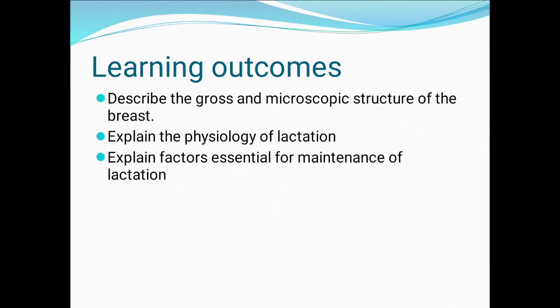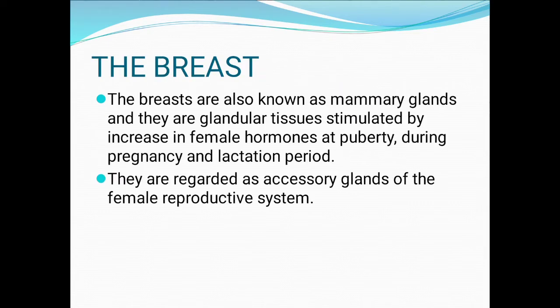Learning outcomes: describe the gross and microscopic structure of the breast, explain the physiology of lactation, and explain factors essential for maintenance of lactation. So first, the breast — the breast are also known as mammary glands and they are glandular tissues stimulated by increase in female hormones at puberty, during pregnancy and lactation periods.